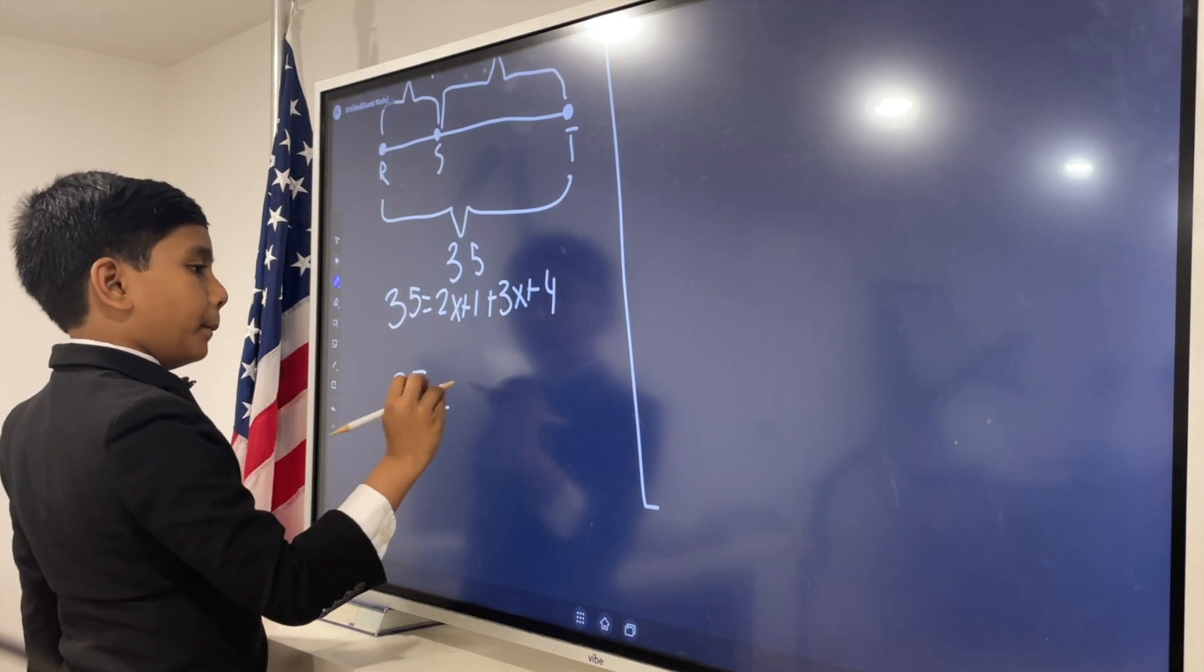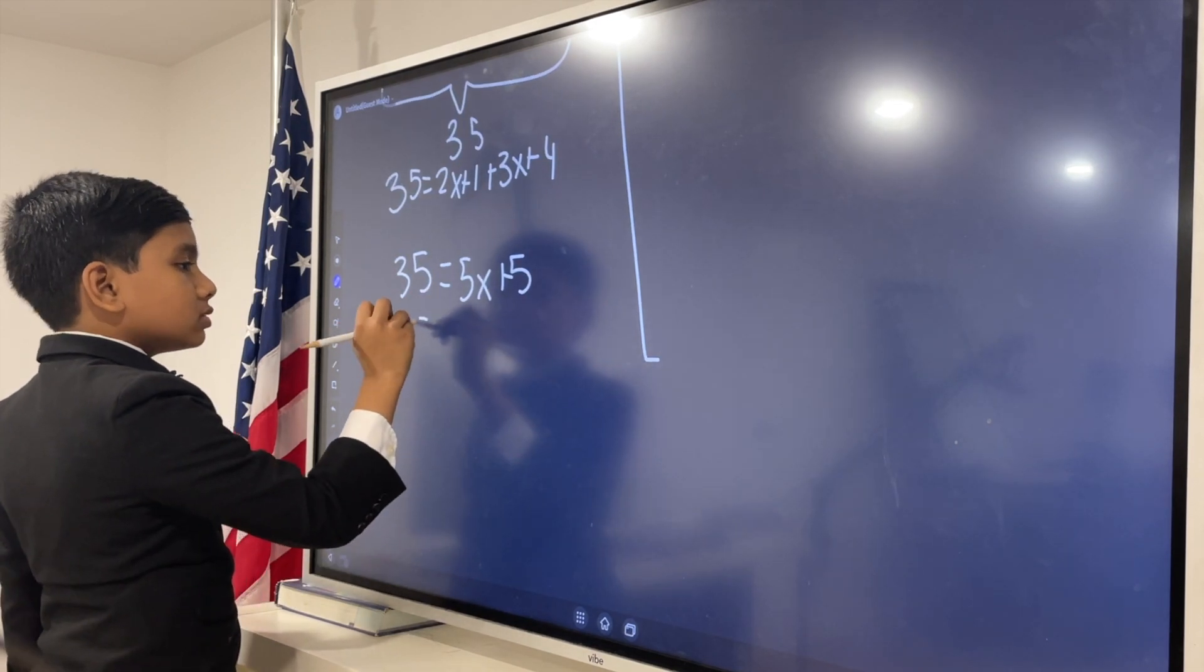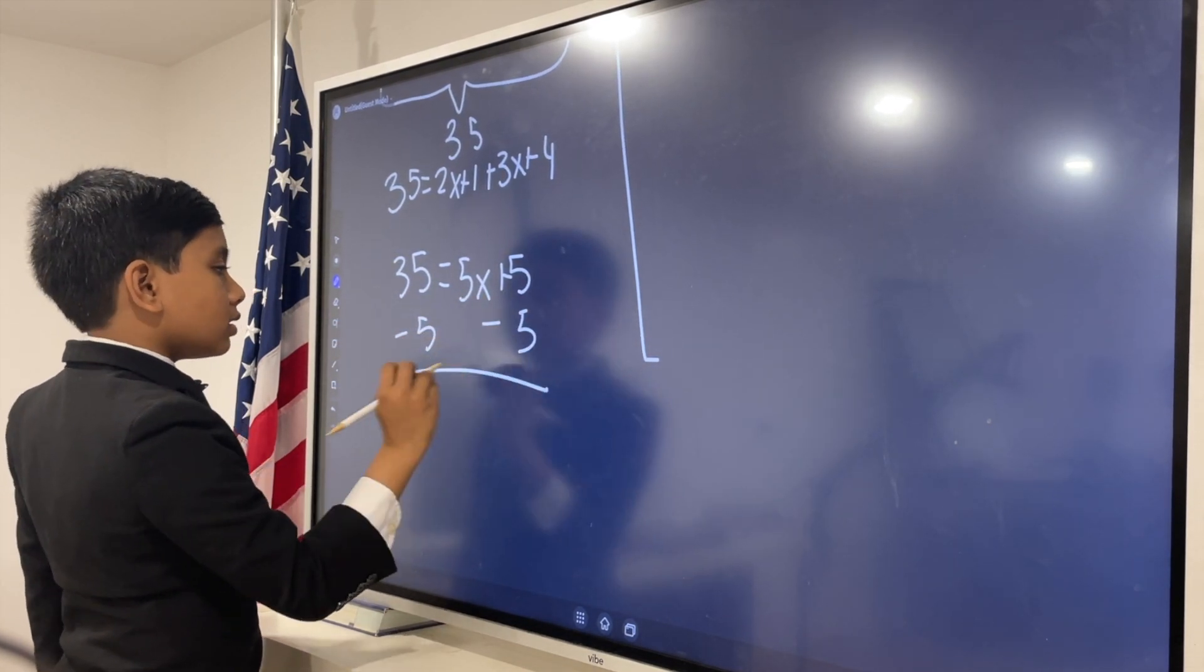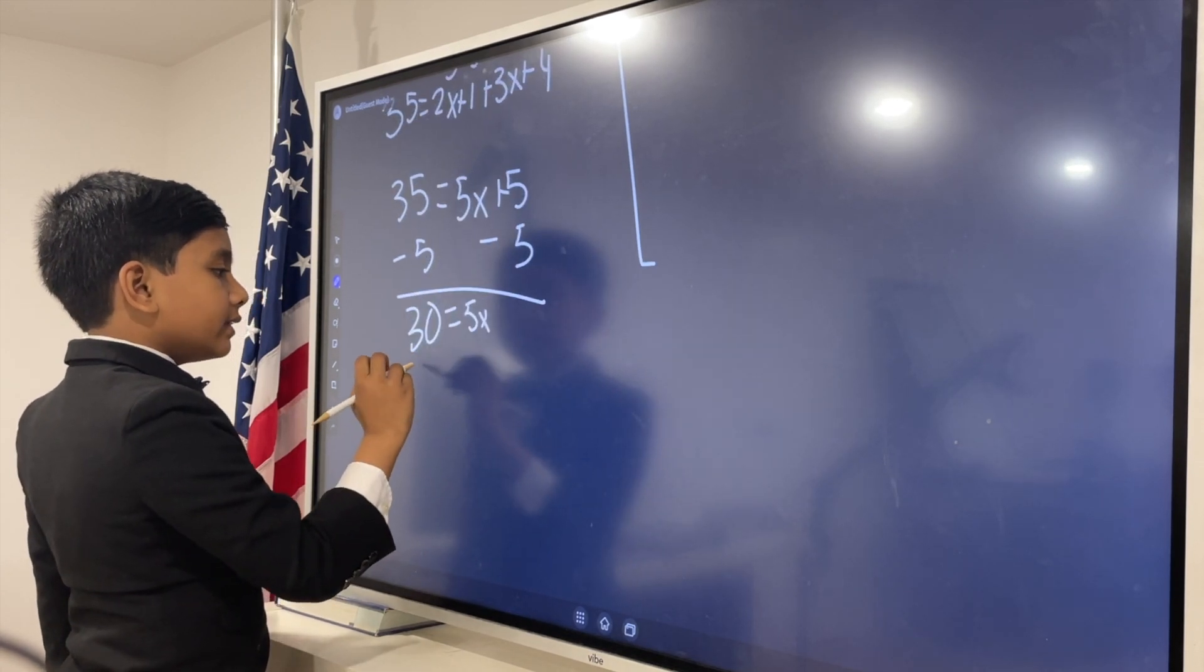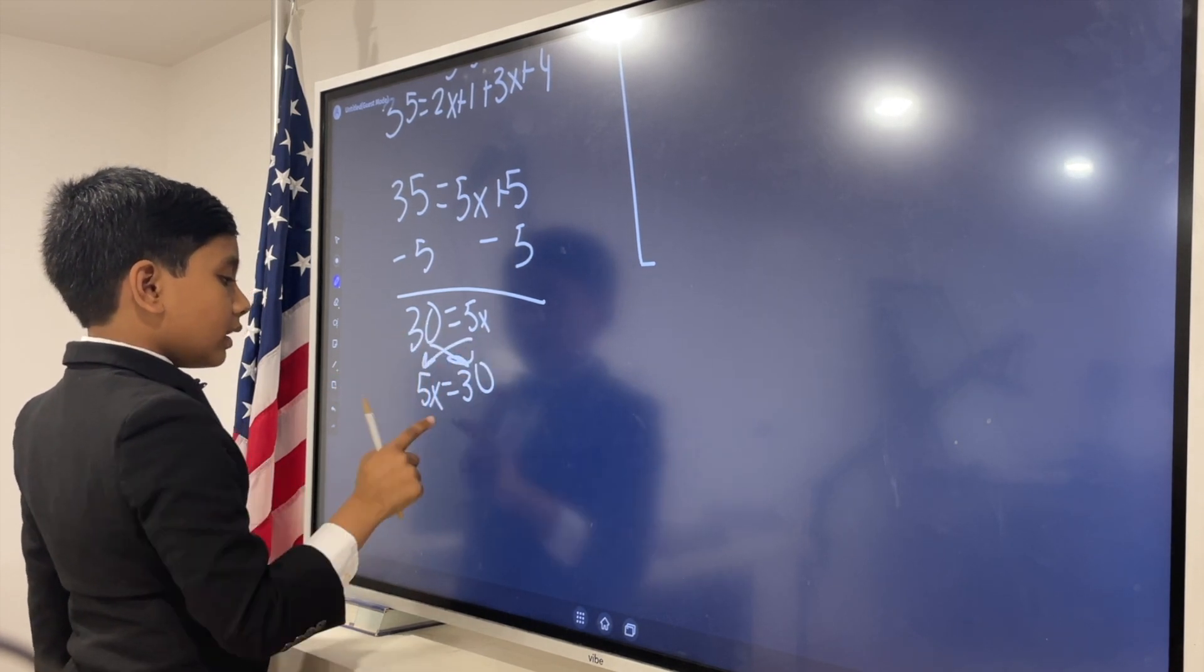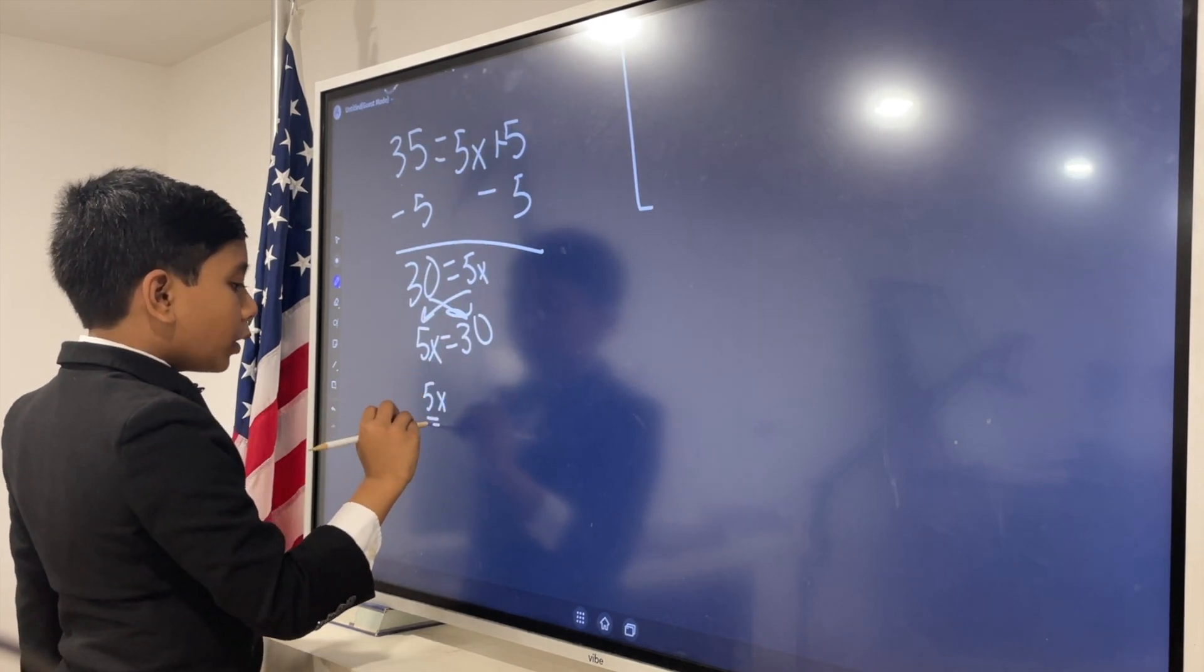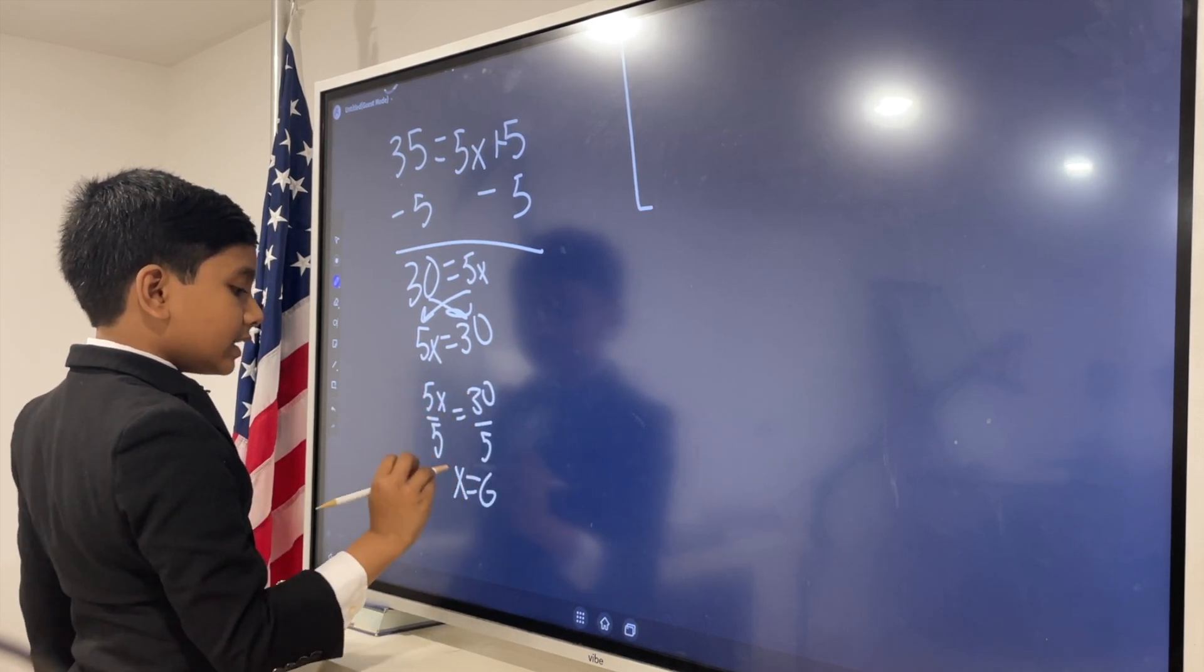Now, we can do some basic algebra to find out how to finish this. So, 35 equals 5x plus 5. We subtract 5 from both sides: 30 equals 5x. And we divide both sides by 5, which gives us x is 6.